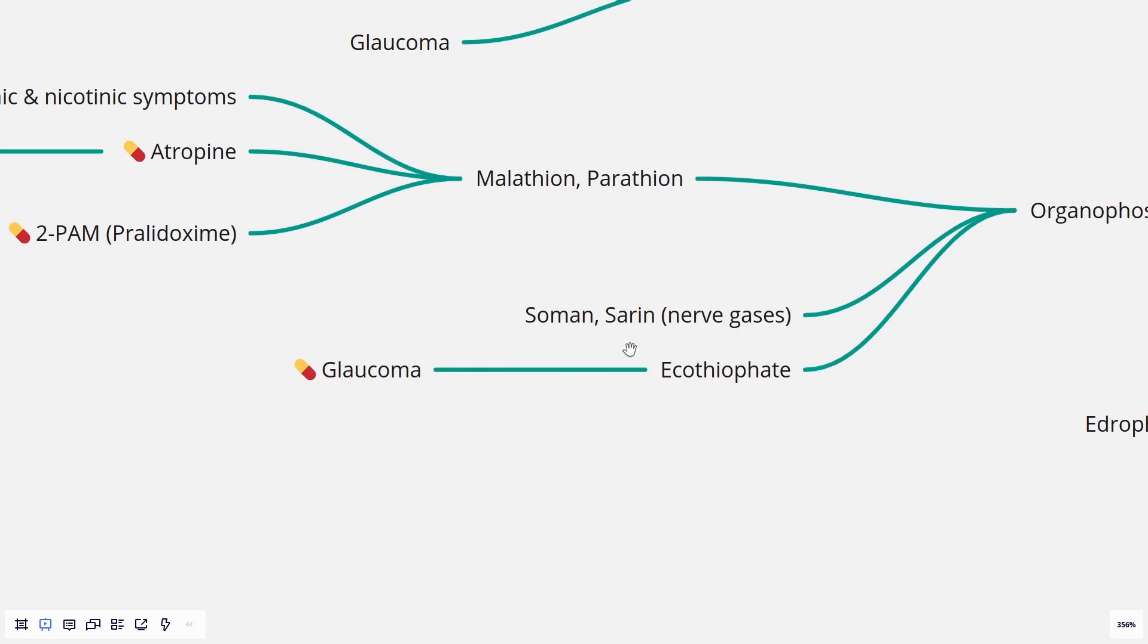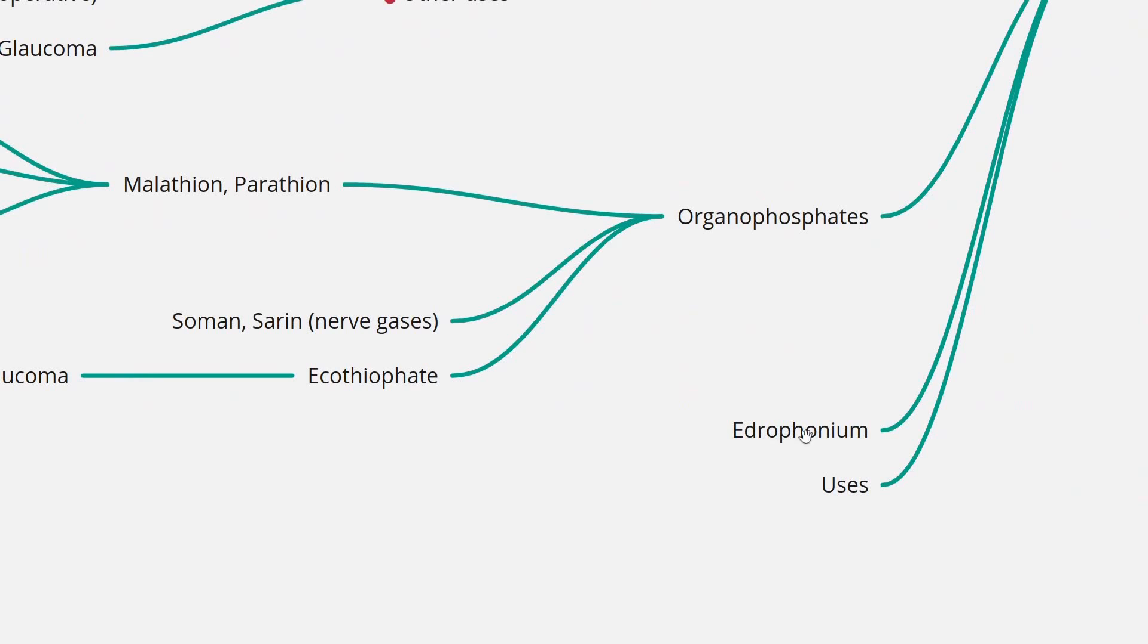Nerve gases—two examples: soman and sarin. These are poisonous; aging happens very rapidly, and patients often die without any effective treatment. Echothiophate is the only organophosphate that is used clinically for the treatment of glaucoma. Edrophonium is used in the tensilon test in myasthenia gravis. It has a—I'll be explaining this concept separately in a separate video.